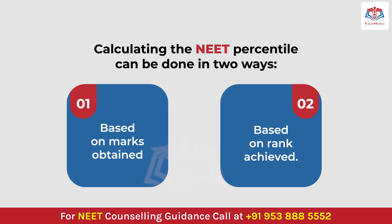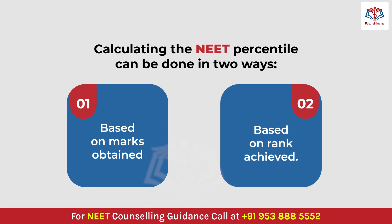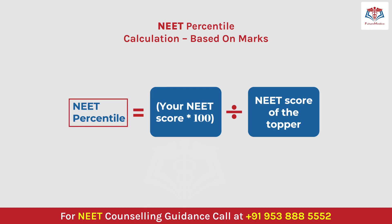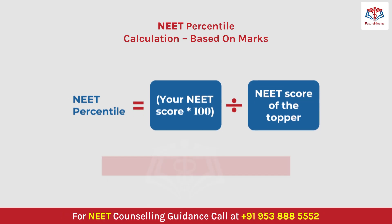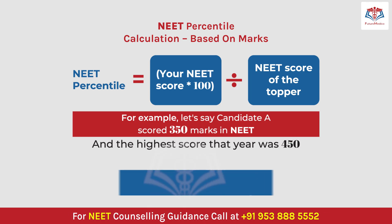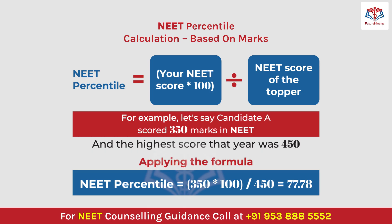Calculating the NEET percentile can be done in two ways: based on marks obtained, or based on rank achieved. Method 1 involves comparing a candidate's NEET score with the highest score obtained that year. The formula is: NEET Percentile = (Your NEET Score ÷ NEET Score of the Topper) × 100. For example, if Candidate A scored 350 and the highest score was 450, then 350 ÷ 450 × 100 = 77.8 percentile, meaning Candidate A surpassed 77.78% of candidates that year.